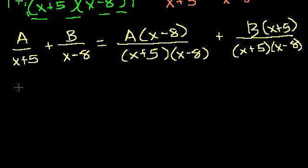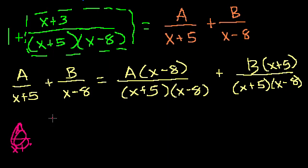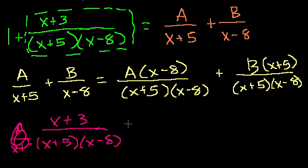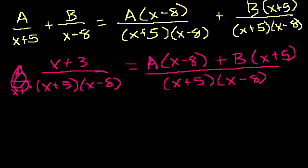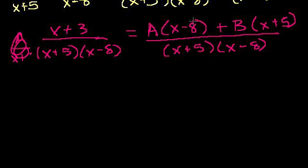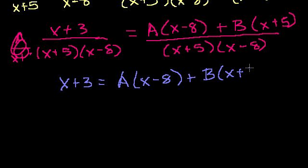So x plus 3 over x plus 5 times x minus 8 is equal to the sum of these two things on top, a times x minus 8 plus b times x plus 5, all of that over their common denominator, x plus 5 times x minus 8. So the denominators are the same. So we know that when you add this together, you have to get this. So if we want to solve for a and b, let's just set that equality. We can ignore the denominators. So we can say that x plus 3 is equal to a times x minus 8 plus b times x plus 5. Now, there's two ways to solve for a and b from this point going forward.